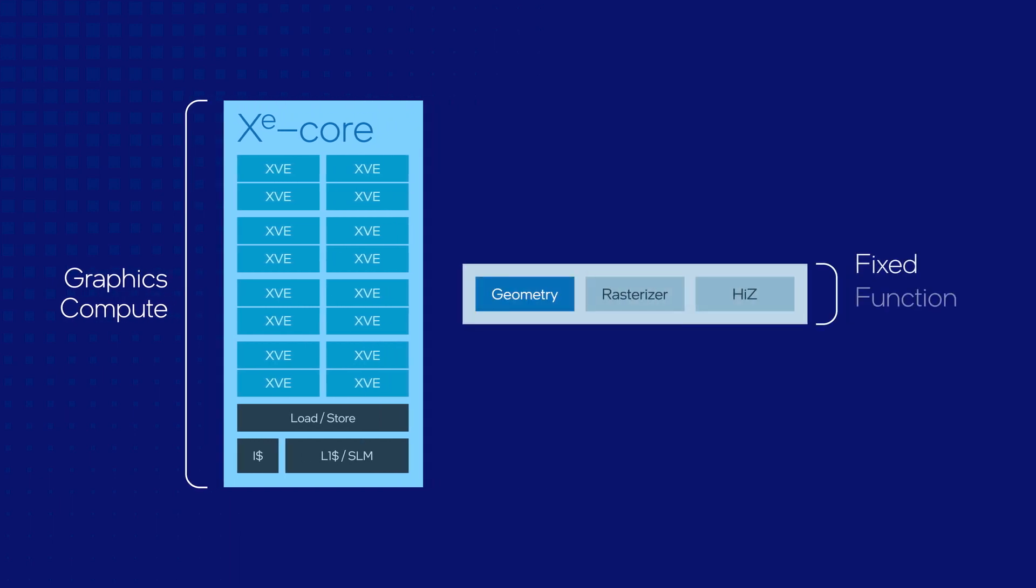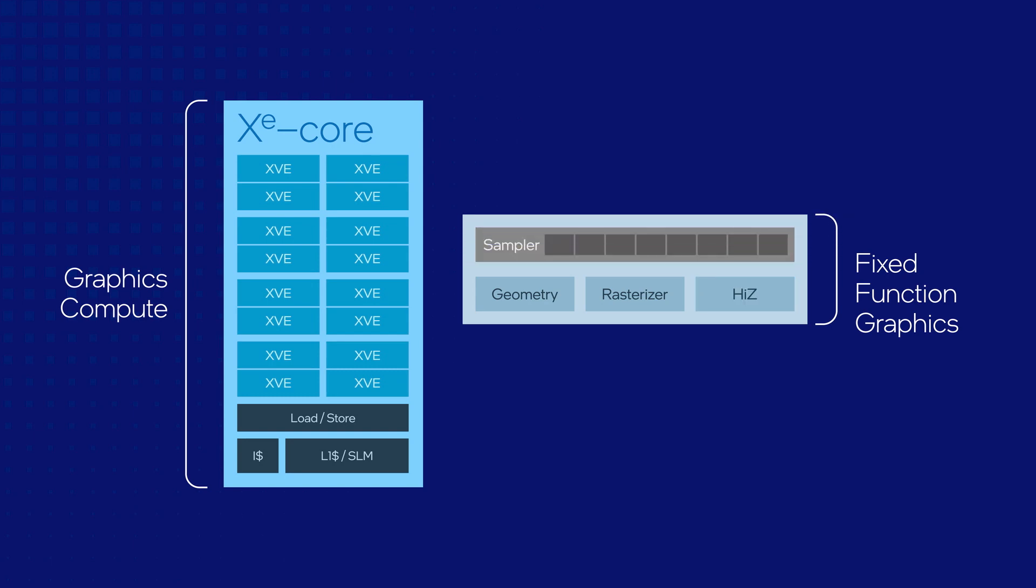This includes the geometry pipeline, the rasterizer, and an optimization block called Hi-Z, which allows us to quickly cull hidden pixels.